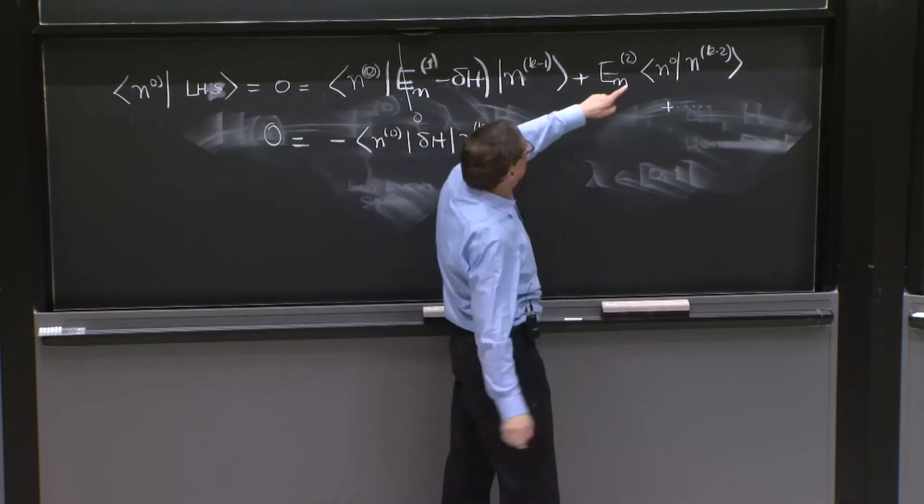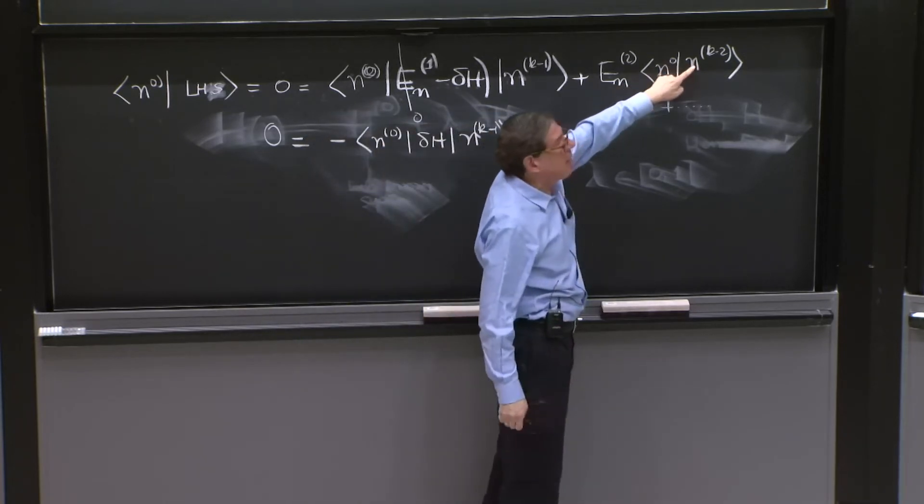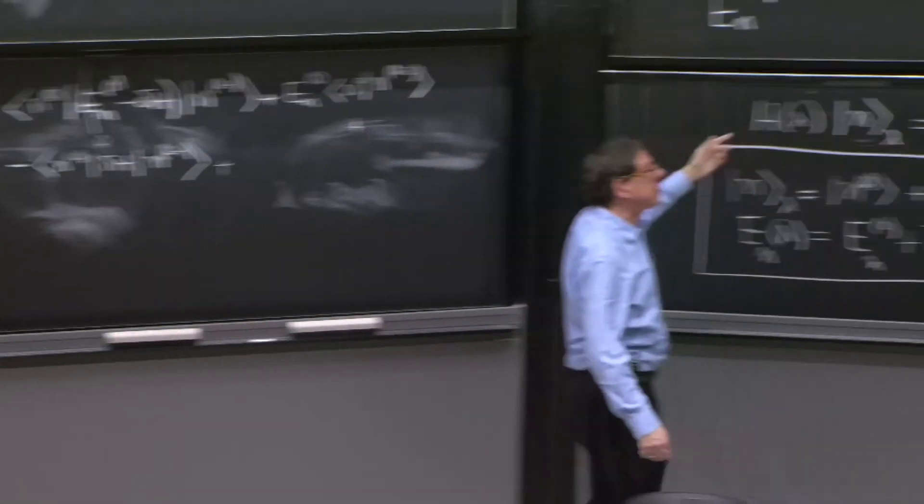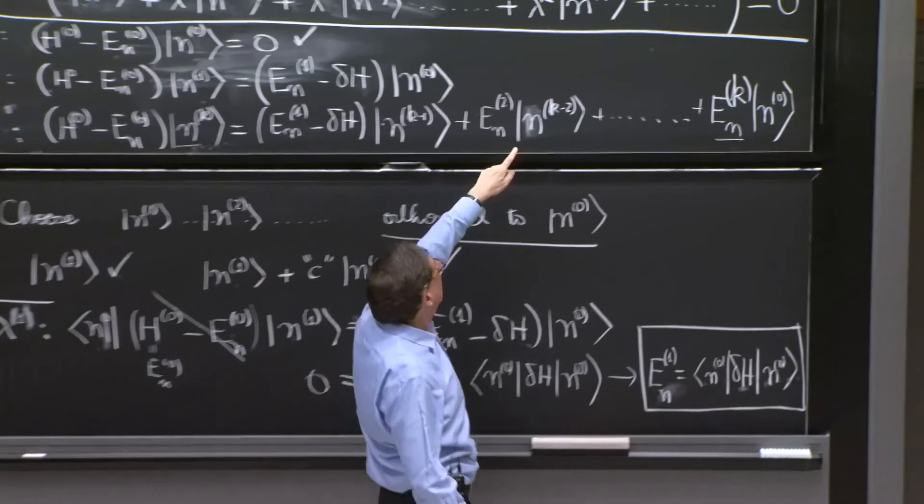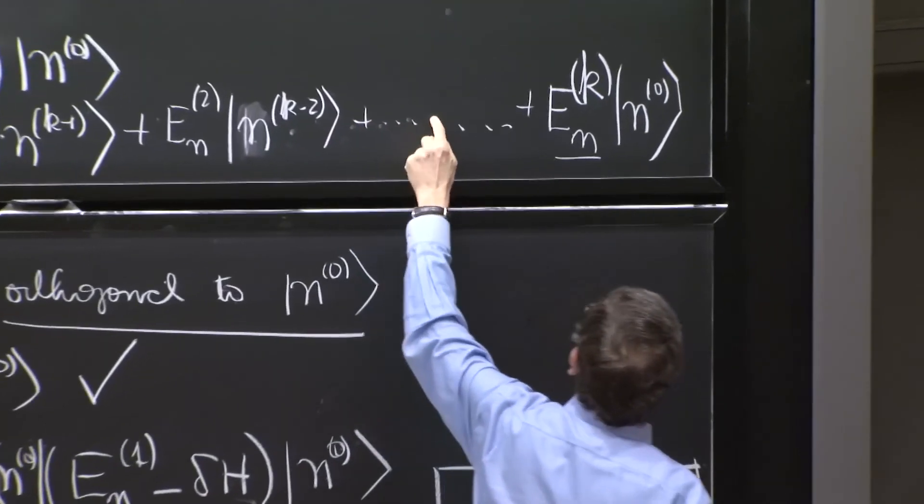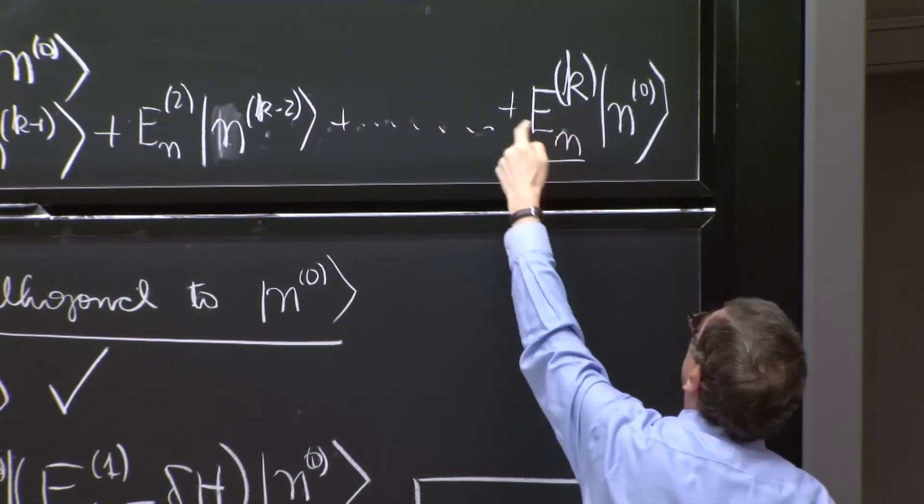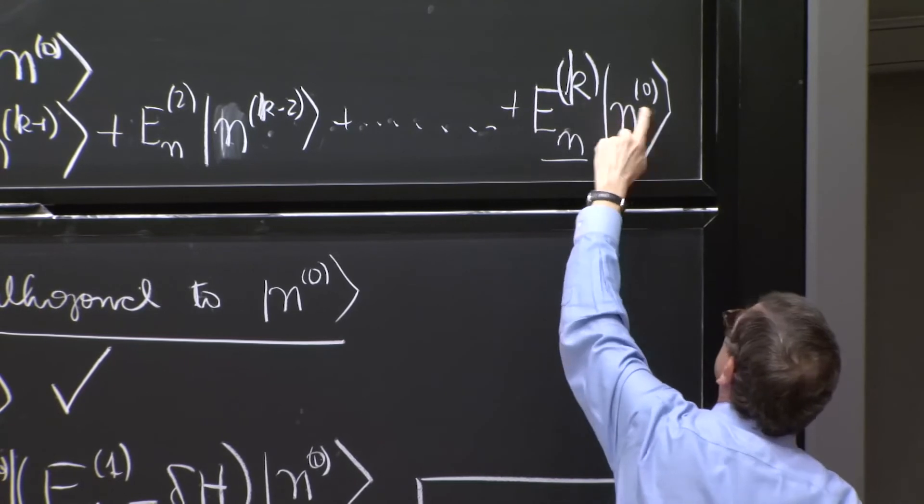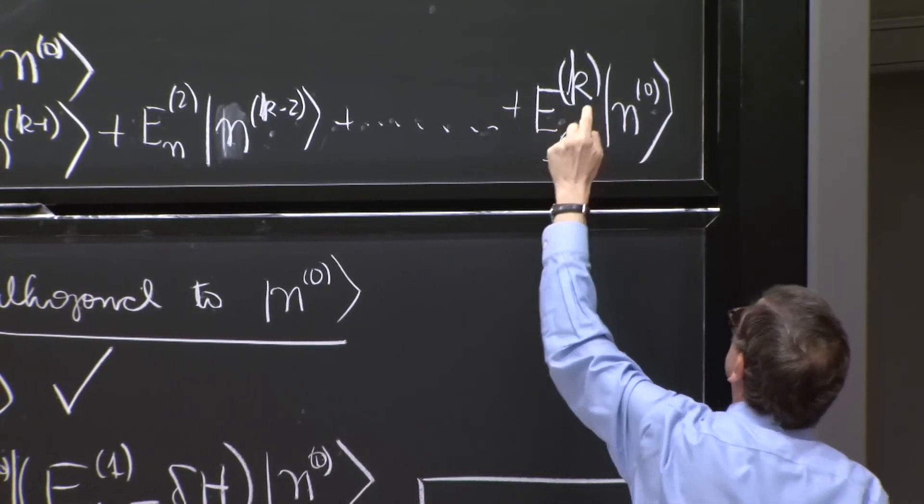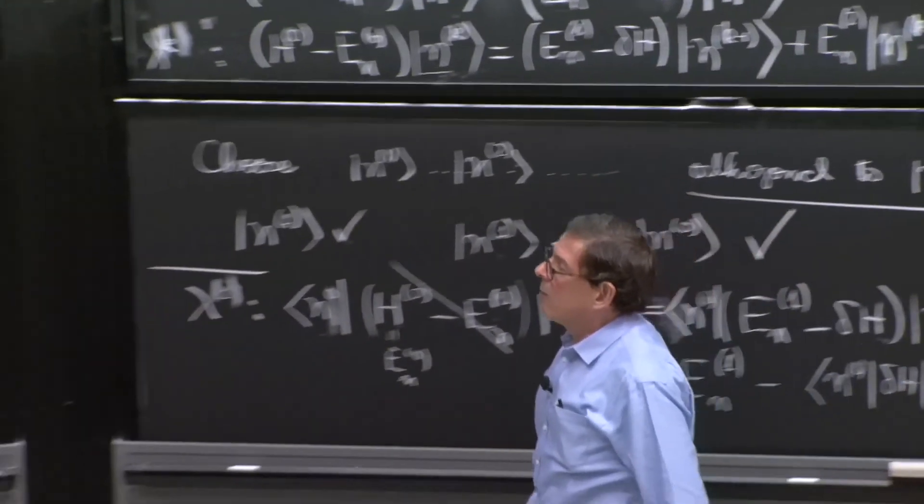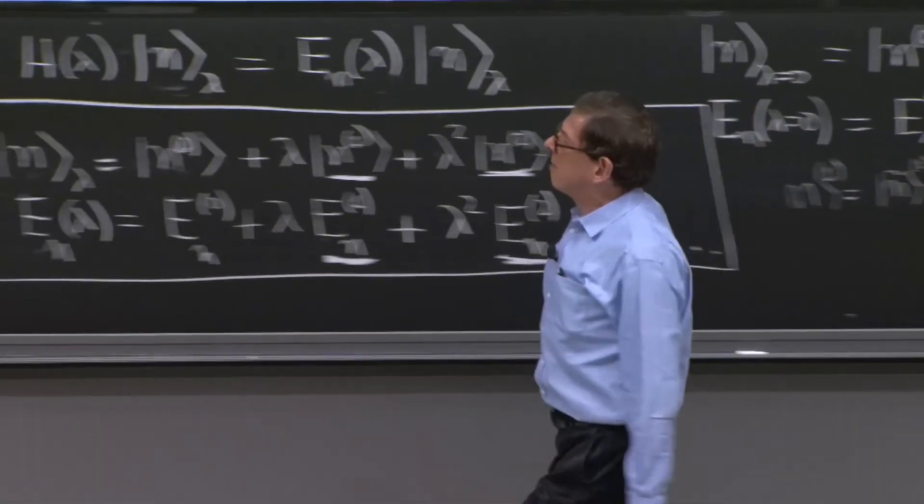And then what else? Well, you have n0 with nk minus 2 here. That's 0. Because this is a higher state. And all the terms give you 0 until you get here, where the n0 with the n0 give you 1. So the only term that survives is the last one. And we get enk.